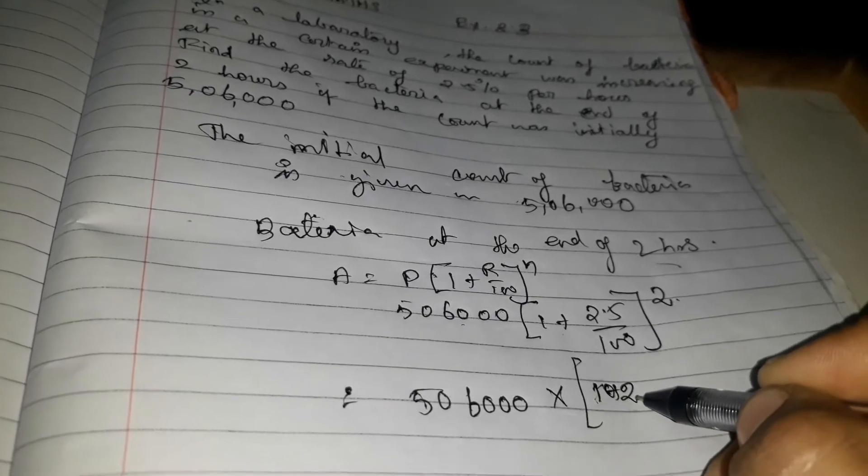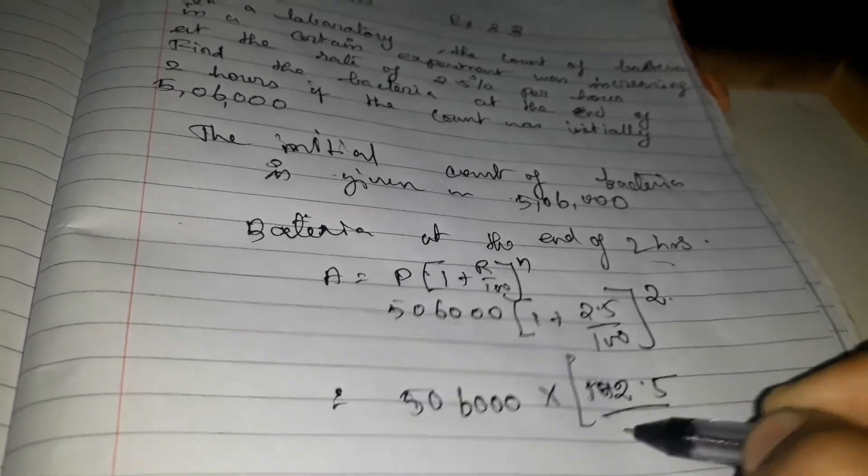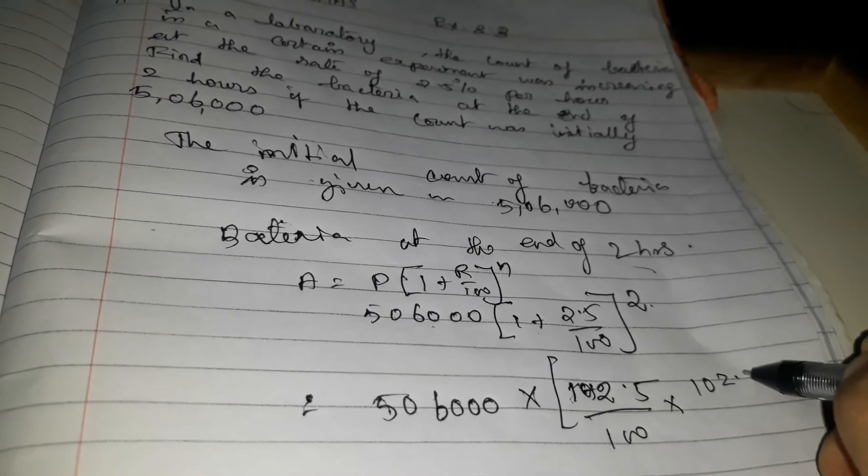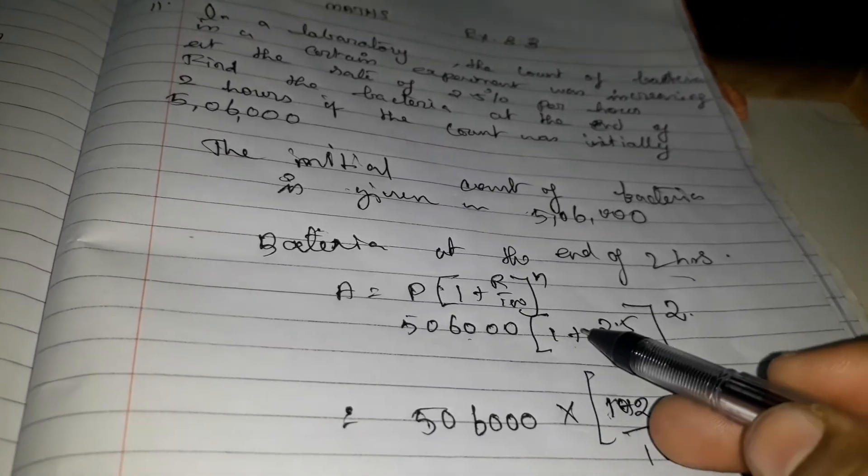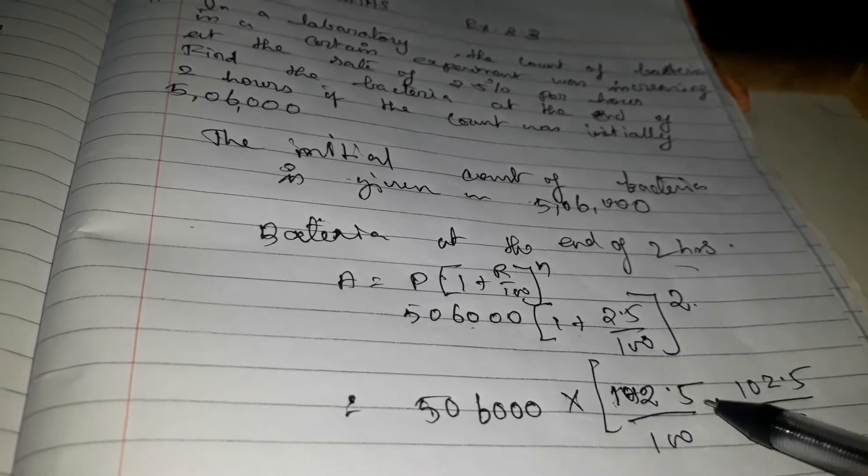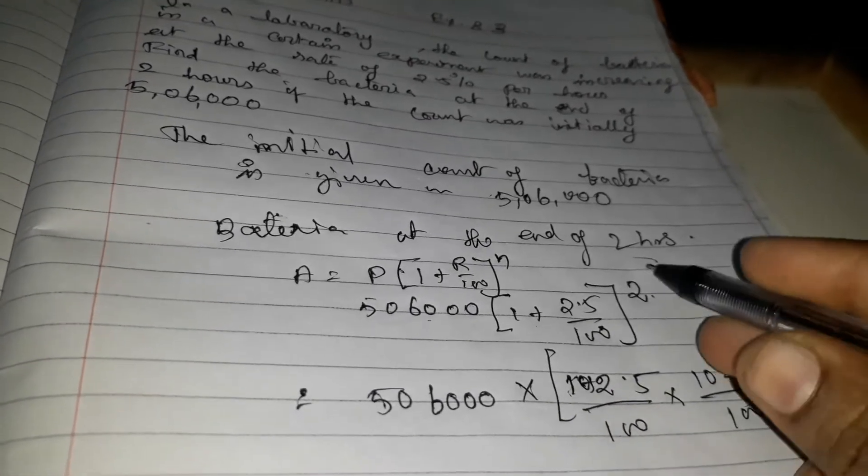Applying the formula: 56,000 multiplied by 102.5 by 100, multiplied by 102.5 by 100.